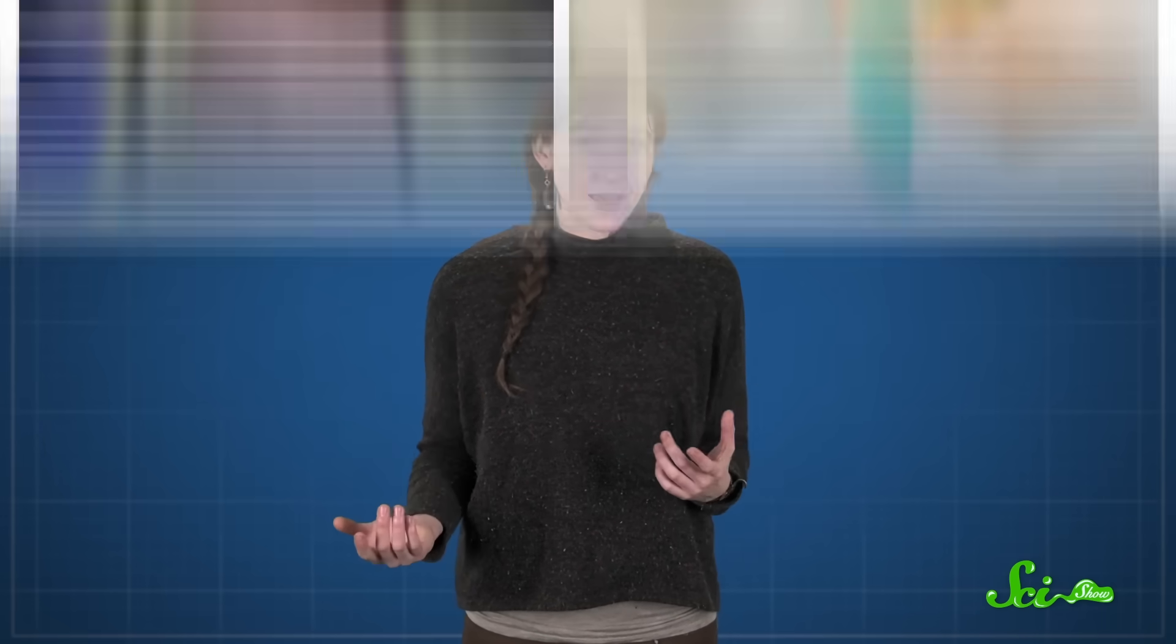Now, in the grand scheme of things, your blood type is only a bit player when it comes to what diseases you might get. Eating too many hamburgers and not working out, for instance, are almost certainly more damaging to your heart than having A or B antigens on your blood cells. But scientists hope to figure out why certain blood types help protect you from certain conditions, while making others worse.